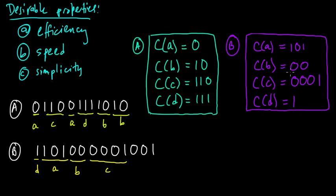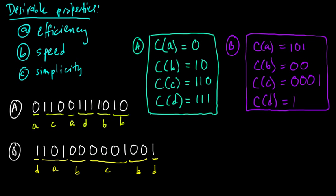We managed to decode it, so on this little example code B is uniquely decodable — though that doesn't necessarily prove the whole code is. But it took quite a bit more effort. Going through this mentally was much more difficult than code A. Heuristically, it looks like code B is going to take longer to decode in general than code A. So can we describe why A was easier than B?